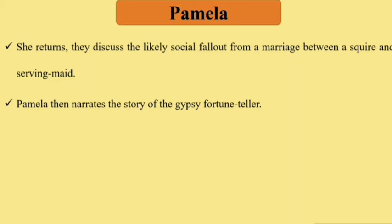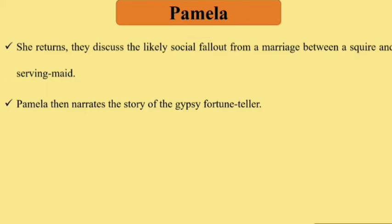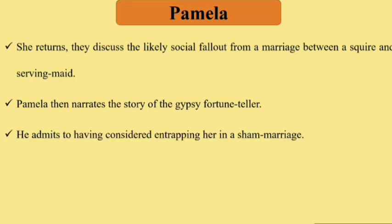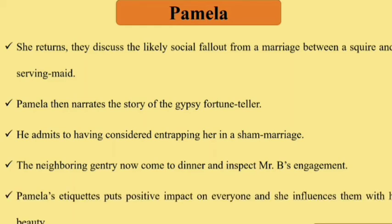They discuss the likely social fallout from a marriage between a squire and a serving maid. Pamela then narrates the story of the gypsy fortune teller to Mr. B. He admits to having considered entrapping her in a sham marriage. The neighboring gentry come to dinner and inspect Mr. B's engagement.